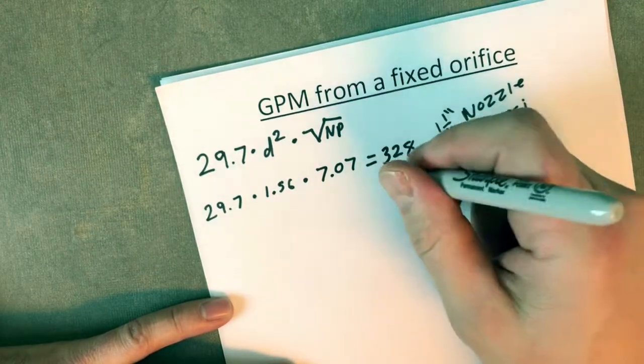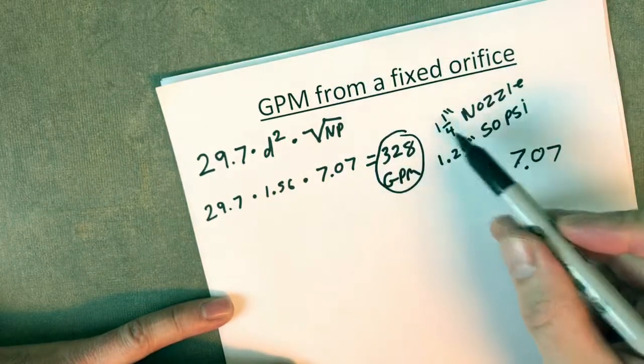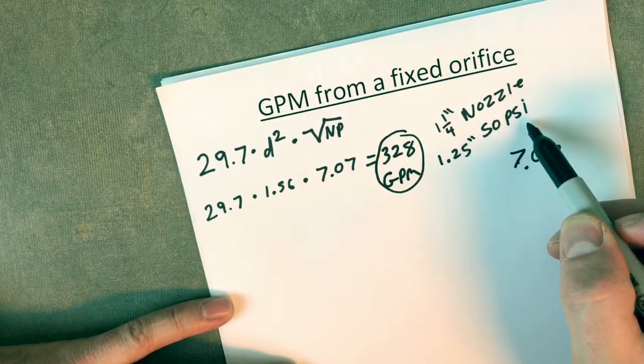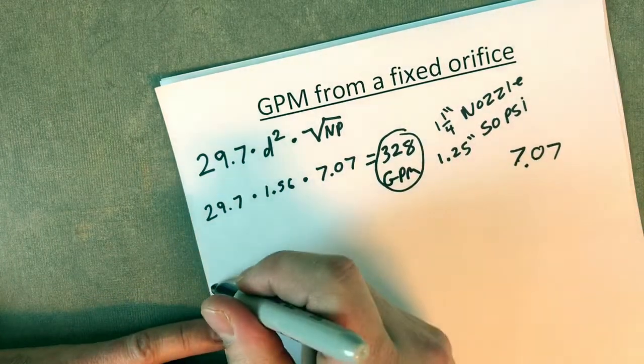That's 328 GPM. So out of our inch and a quarter nozzle at 50 psi, we are getting 328 gallons a minute. Pretty quick to calculate.